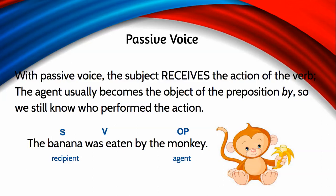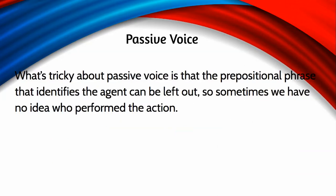One thing that makes passive voice a less preferred form is that we have a weaker action, because the thing performing the action is buried at the end of the sentence. It's harder for readers to understand and visualize what's happening. It gets even trickier because sometimes the agent is left out altogether, since prepositional phrases aren't necessary to make complete sentences — and then we have no idea who performed the action.